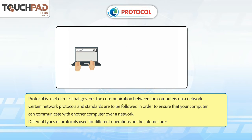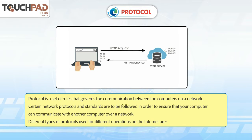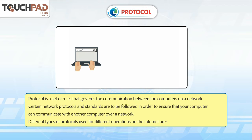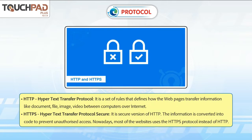Different types of protocols are used for different operations on the internet. HTTP – Hypertext Transfer Protocol – is a set of rules that defines how web pages transfer information like documents, files, images, and videos between computers over the internet.